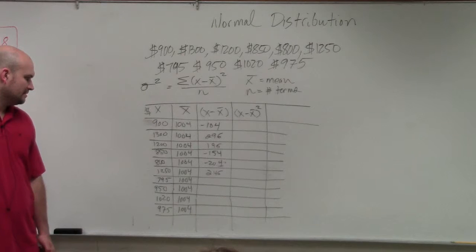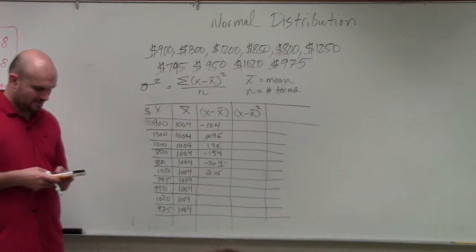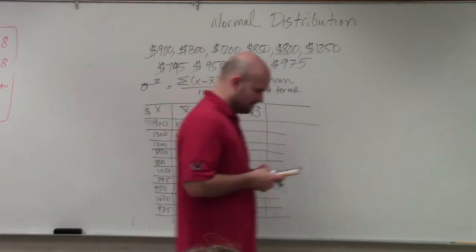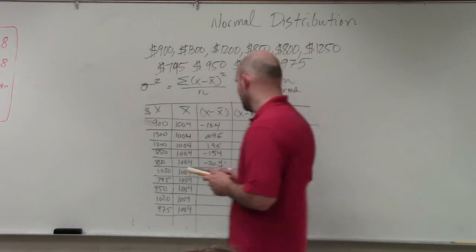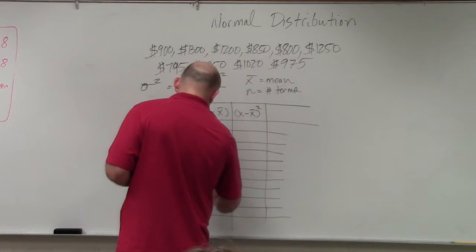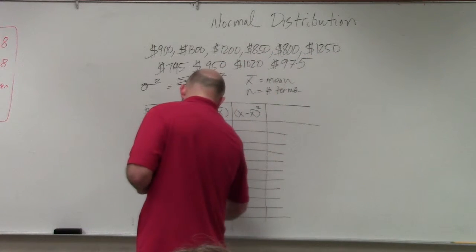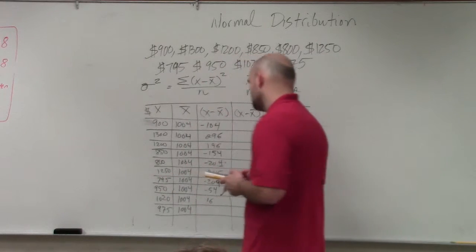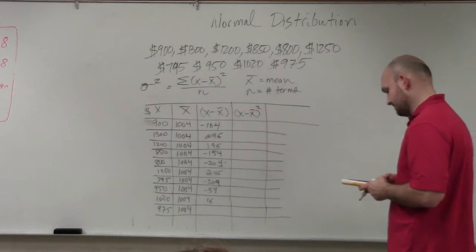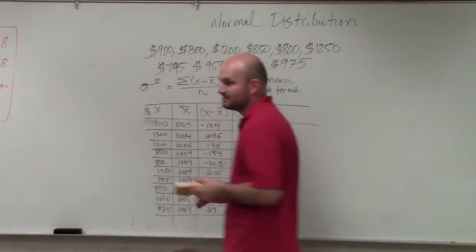This one would be negative. My mind's already starting to hurt me. My brain hurts. So I'm just going to resort to my calculator. 795, 209. So I had that right. Negative 54. This one's obviously going to be 16. And then 975 minus 1004 is negative 29. Does everybody see how I found the difference?